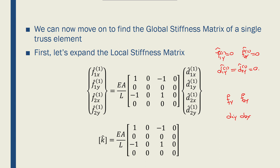In order to use the transformation matrix, it is necessary to expand our local stiffness matrix into a 4x4 matrix. The first step is to insert two zeros into the vector of nodal forces and two zeros into the vector of nodal displacements, making each a 4x1 vector.